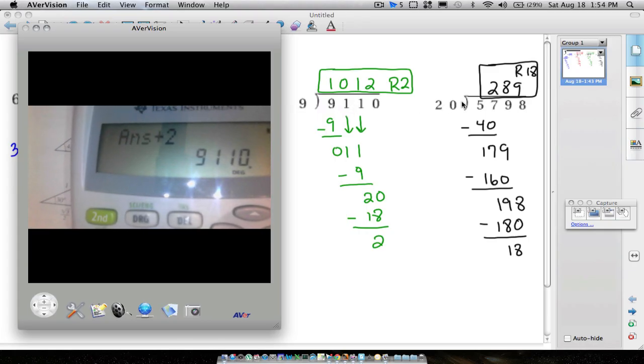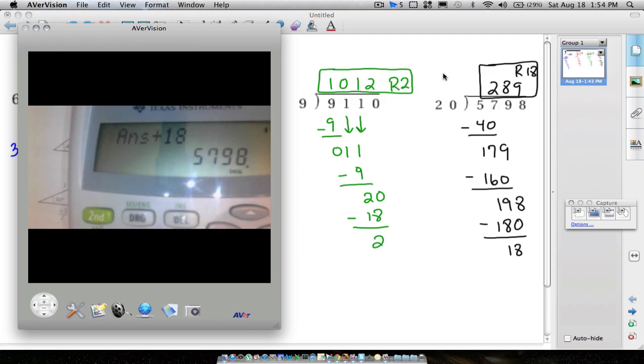And the last one. Take your two numbers on the outside and multiply them together. 20 times 289. We get 5,780. And if we add our remainder of 18 to that number, we get 5,798. Just to show you what those remainders mean.